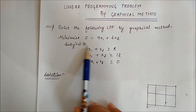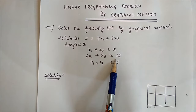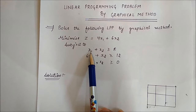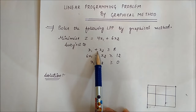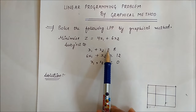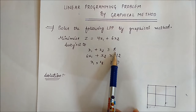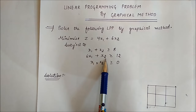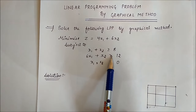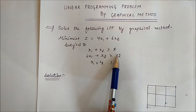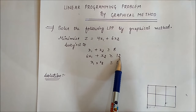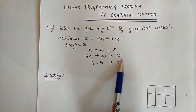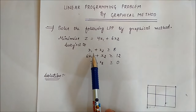Subject to these two constraints: the first one is x1 plus x2 greater than or equal to 8, and the second one is 6x1 plus x2 greater than or equal to 12. Constraint means there are some restrictions.